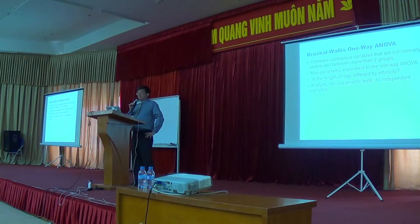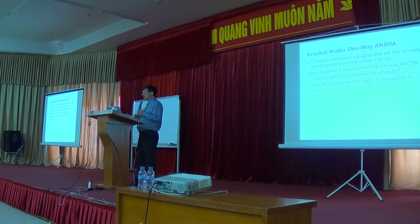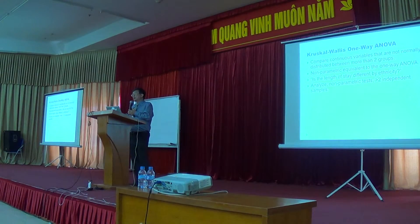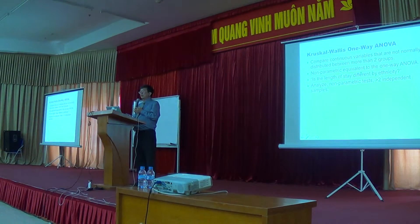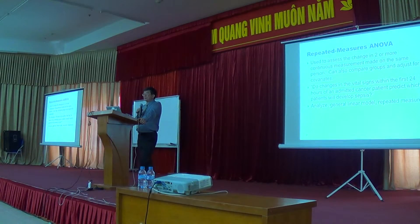The Kruskal-Wallis one-way ANOVA compares continuous variables that are not normally distributed between more than two groups. It is a non-parametric equivalent to the one-way ANOVA — similar to how the Mann-Whitney U test relates to the t-test when normality fails for two groups. For example, it can be used to test whether length of hospital stay differs by ethnicity, comparing more than two independent samples.